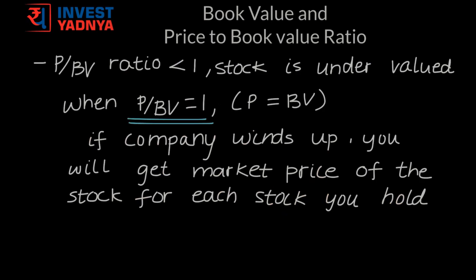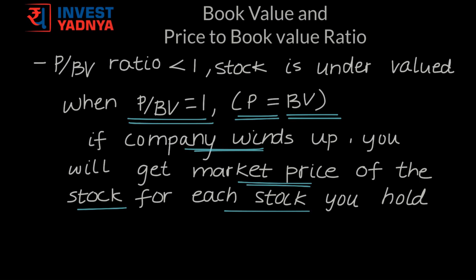Whenever the price to book value ratio is equal to 1, it implies that the market price of the stock equals book value per share — so if the company winds up, you are bound to get the current market price for each stock you hold. Whenever the price to book ratio is less than 1, it is said to be a good time to buy as the stock is undervalued. However, before buying such a stock, you should analyze why it is trading below its book value, since a low price to book ratio may not always be a good buy, and analyzing other parameters becomes important.